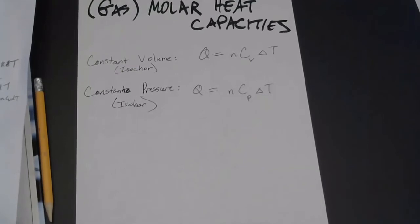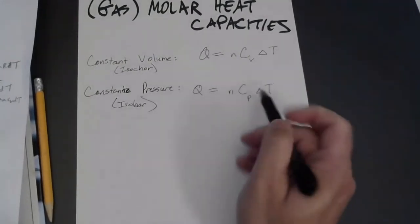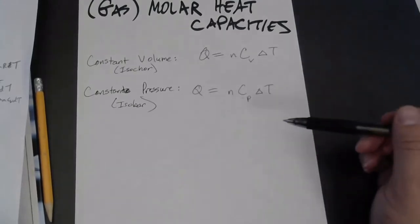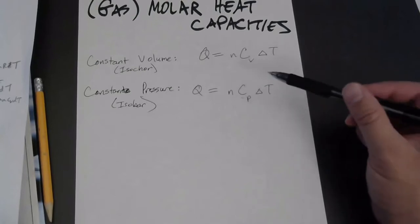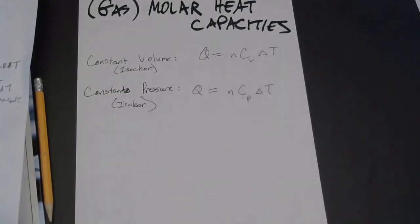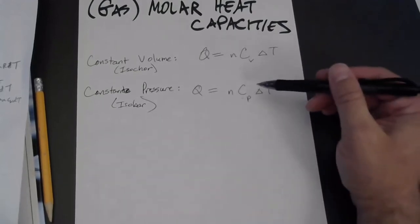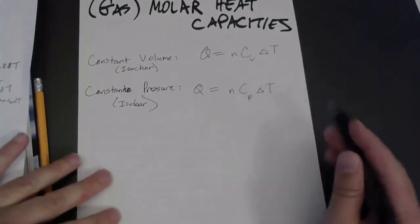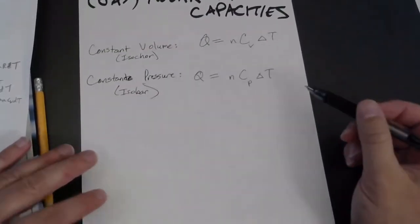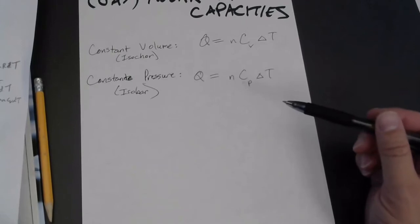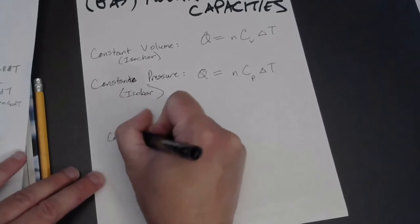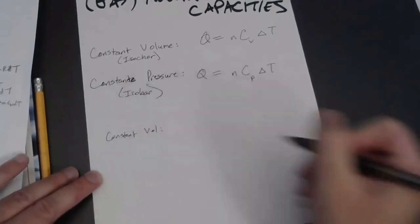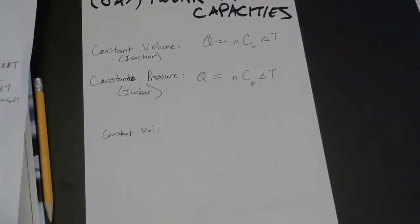We'll now follow the reasoning in your book, page 533, to relate these two. Is there a relationship between Cₚ and Cᵥ? These numbers should be different from one gas to the next, but we'll see that the relation between them does not depend on the gas, which is kind of interesting. For constant volume, you want to remember that the starting point for many things in these chapters is the first law of thermodynamics — just as in mechanics we started with F = ma.